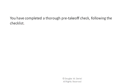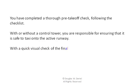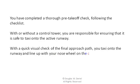You have completed a thorough pre-flight check following the checklist. With or without a control tower, you are responsible for ensuring that it is safe to taxi onto the runway. With a quick visual check of the final approach path, you taxi onto the runway and line up with your nose wheel on the center stripe and pointed down the runway.